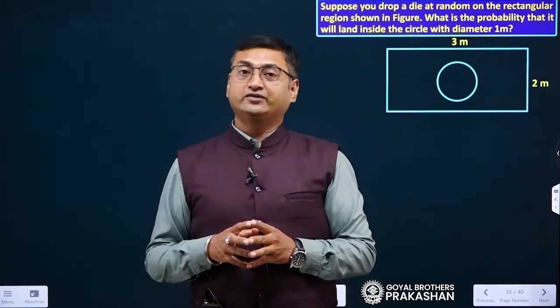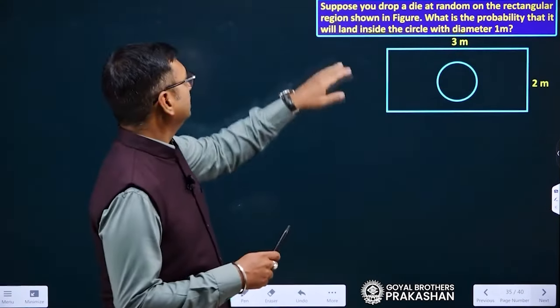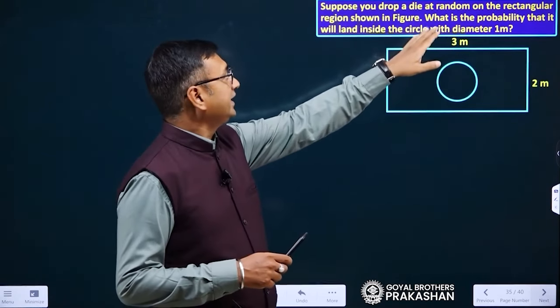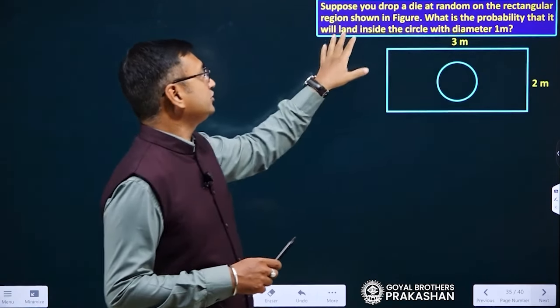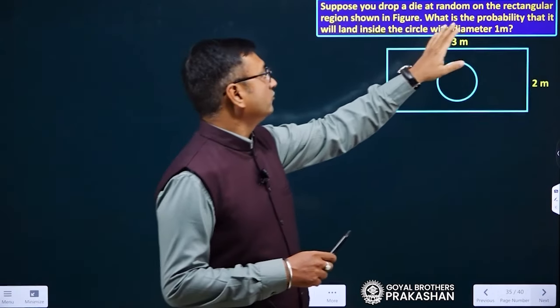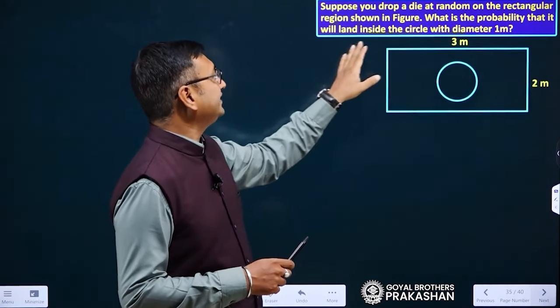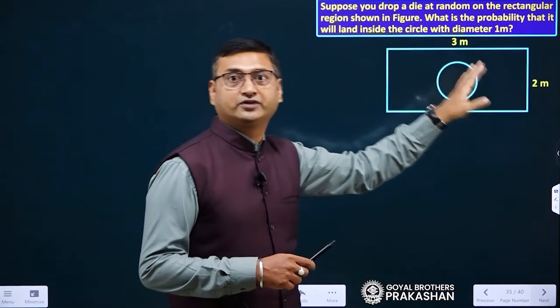Hello students, I hope you all are great and wonderful. Our question is: suppose you drop a die at random on a rectangular region shown in figure, what is the probability that it will land inside the circle with diameter 1 meter?